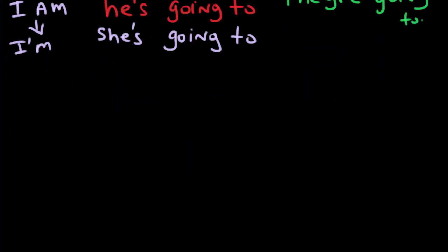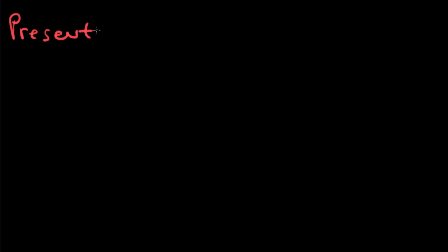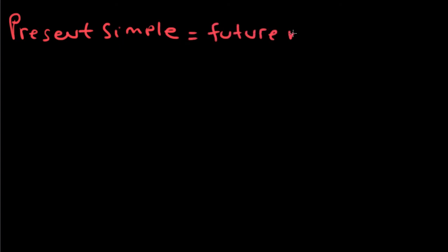Now let's talk about present simple — 'I do' — when it has a future meaning. We can use the present simple when we want to talk about future meanings when it is about a timetable or program.